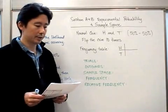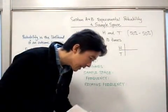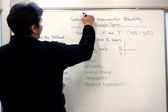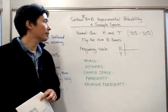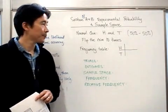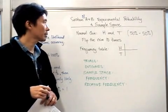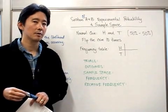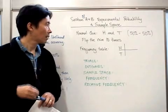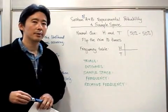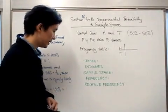Hello everyone. We'd like to take a look at Section 18b, which is called Experimental Probability and Sample Space. We've already done quite a bit with experimental probability and sample space in the IGCSE course, so much of this will be review. But let's go ahead and start at the beginning and cover everything once again.